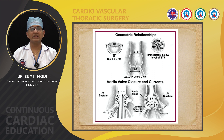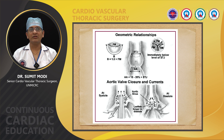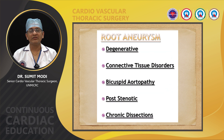Here you can see the aortic valve in systole and diastole. In systole the valve opens up and blood flows from the LV to the aorta, while in diastole the aortic valve closes and prevents regurgitation of blood from the aorta to the left ventricle. The leaflets are longer in diastole.